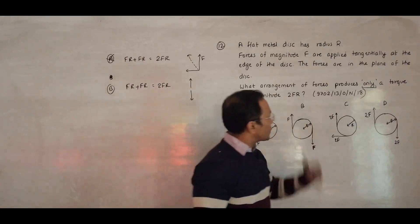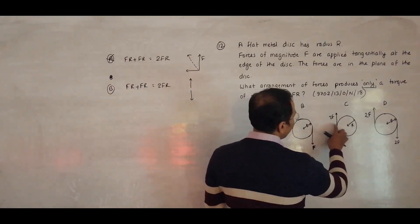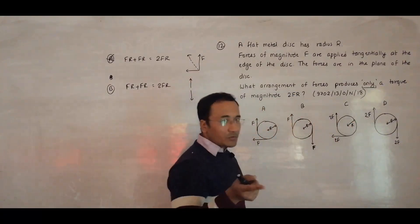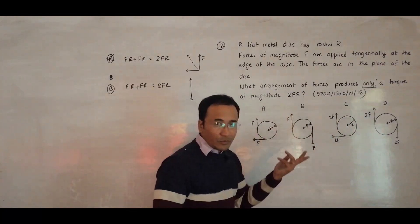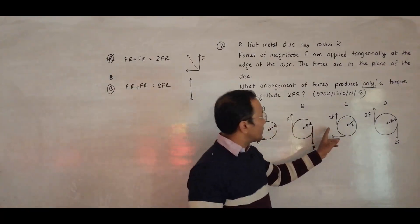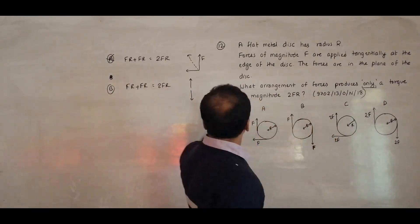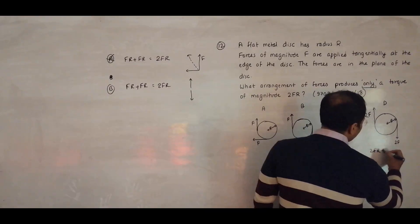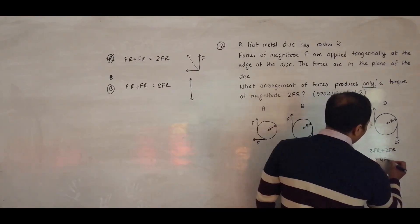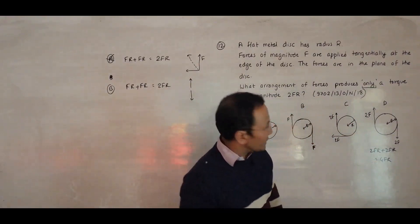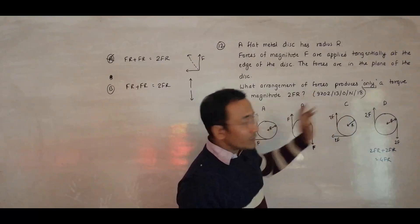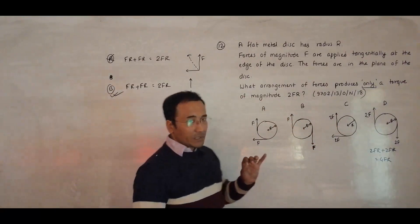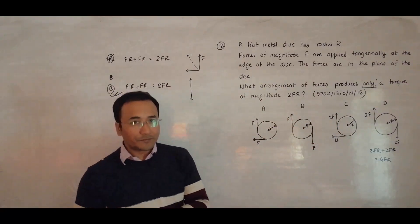For choice C, both forces have magnitude 2F, giving 2F×R + 2F×R = 4FR. It doesn't produce a resultant force, but the torque is 4FR, not 2FR — so it is incorrect. Therefore, choice B is the correct answer, as it produces only a torque of 2FR with no linear resultant force.